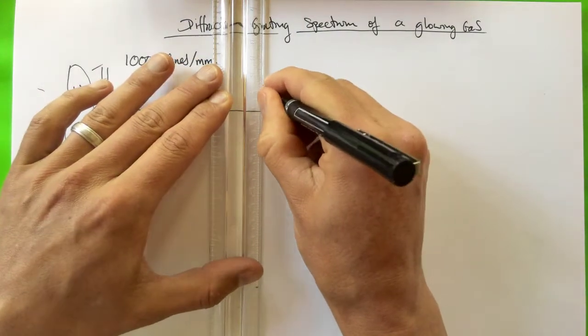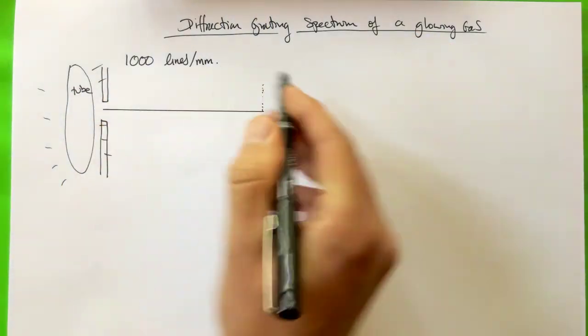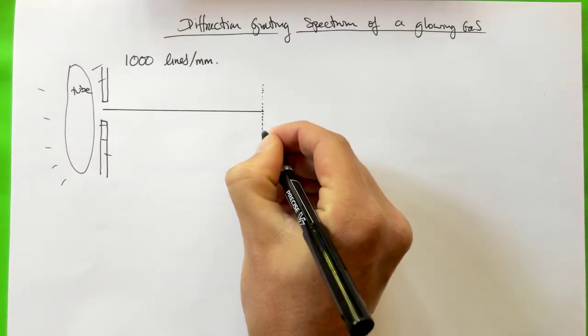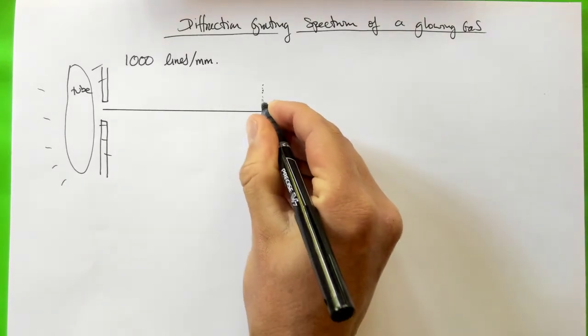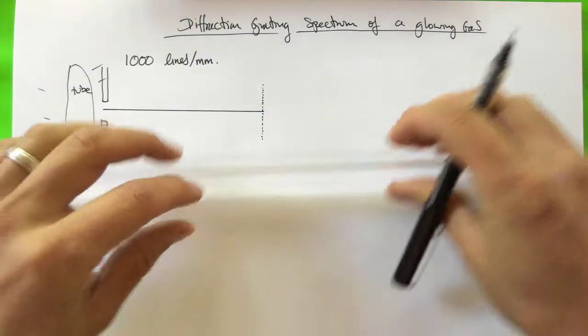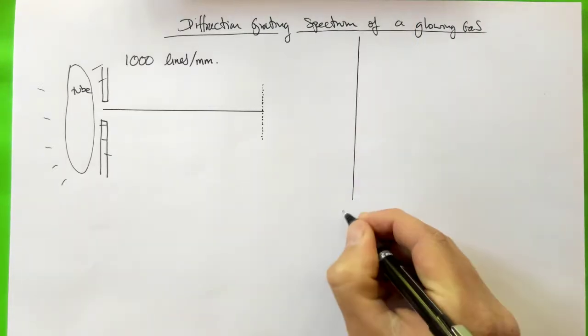So here's the diffraction grating, I'm just going to draw it schematically as a row of dots. 1,000 lines per millimetre means that for every millimetre along this grating there are 1,000 little tiny lines and spaces between those lines and the light will spread out and undergo diffraction and produce spots on a screen in the background. So here's our screen.